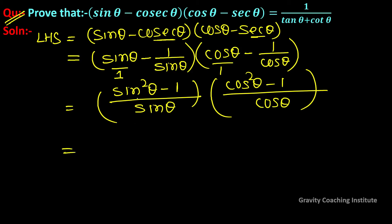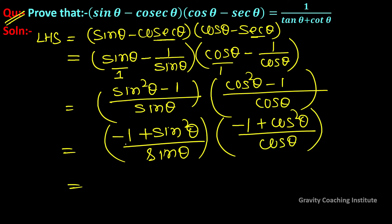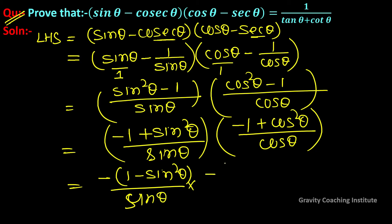This becomes minus 1 plus sin²θ over sin θ, and minus 1 plus cos²θ over cos θ. Taking minus common, this gives 1 minus sin²θ upon sin θ, and 1 minus cos²θ upon cos θ.